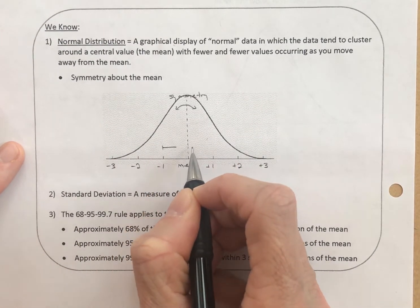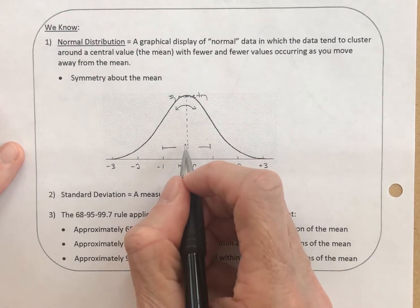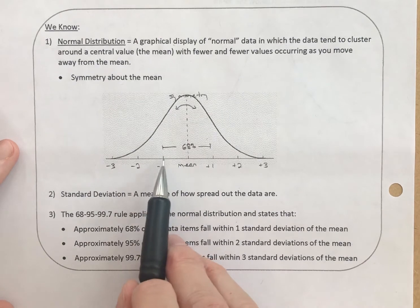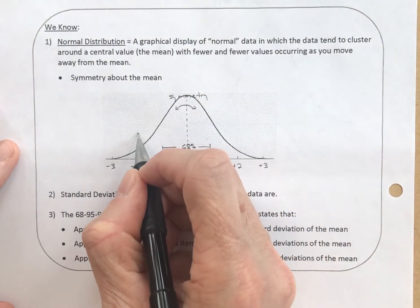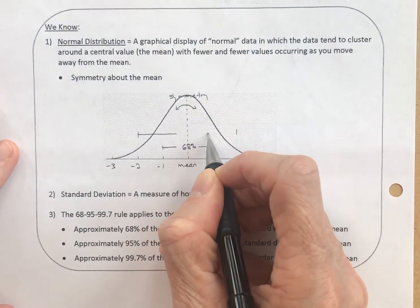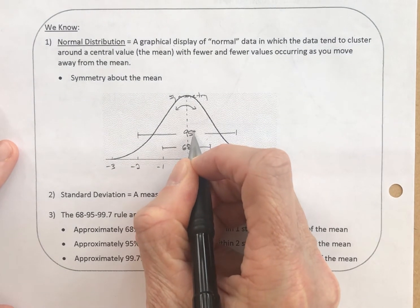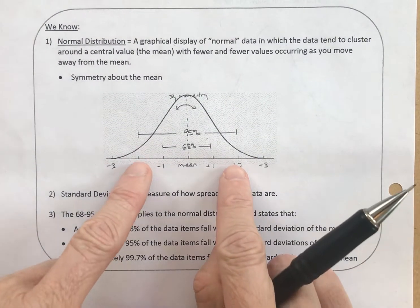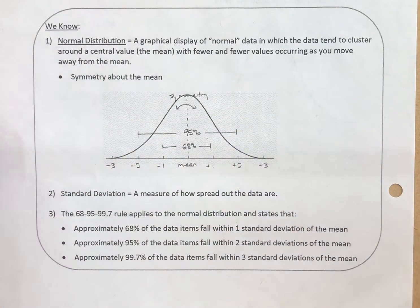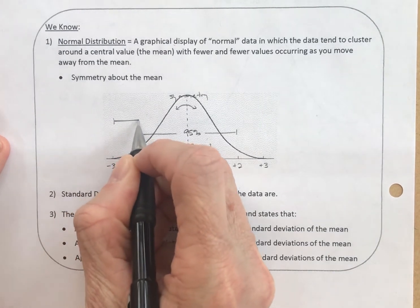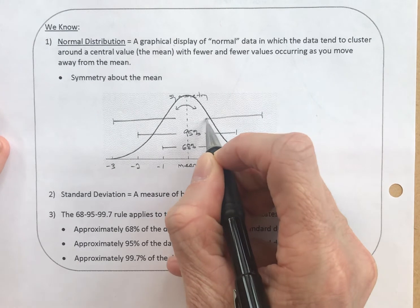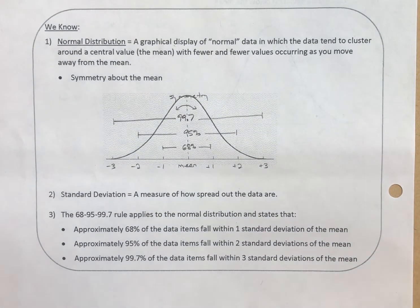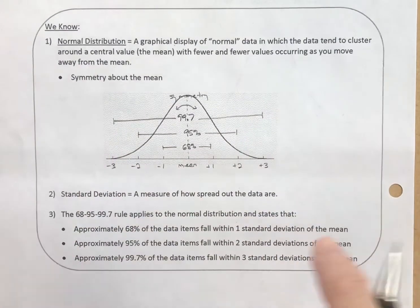That tells us that within one standard deviation, 68% of our data values lie. The vast majority of us are within one standard deviation of the mean. If you go out to two standard deviations, you've now covered 95% of the data items, be it heights or intelligence scores. If you go out to three standard deviations, you've covered 99.7% of the data. Almost all of it is within three standard deviations of the mean.